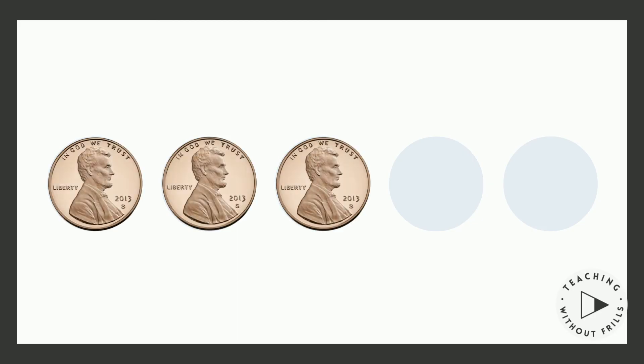I know that there are five pennies in all. So I made five circles. The problem also said that three pennies landed on heads. So I'm going to use three pennies to show that. So how many landed on tails?